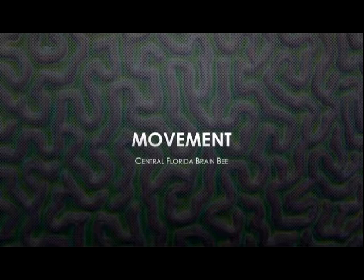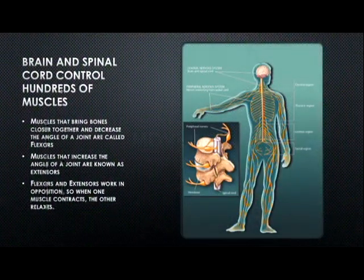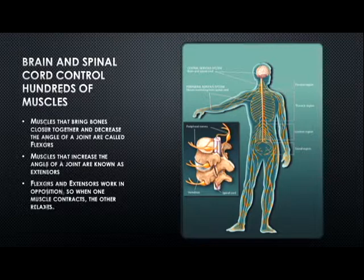First, we need to talk about flexors, extensors, and agonists and antagonists. Every muscle in our body is innervated by some nerve, and those nerves are part of the peripheral nervous system that come from our spinal cord. The musculocutaneous nerve, for example, will innervate the biceps brachii, which helps flex at the elbow. By definition, flexion at a joint is a decrease in the angle of that joint — bending your elbow so your palm is closer to your face is the action of flexion.